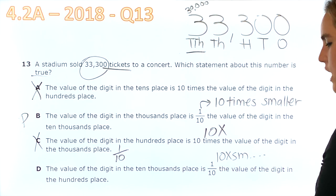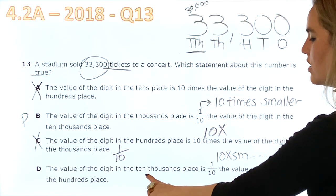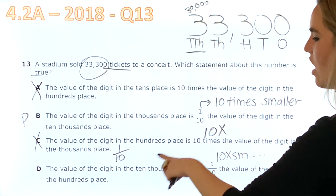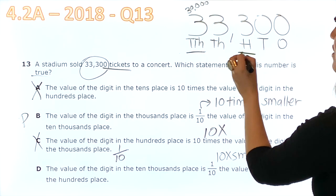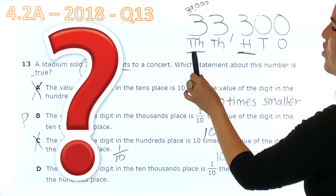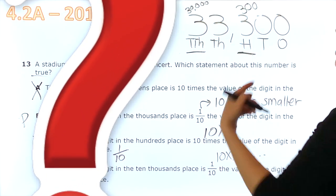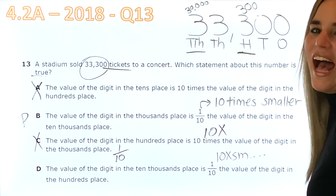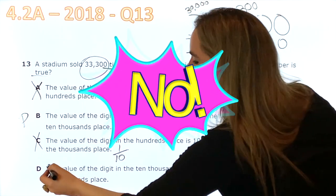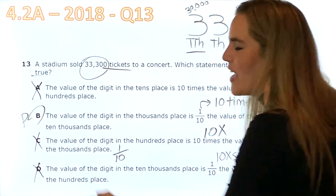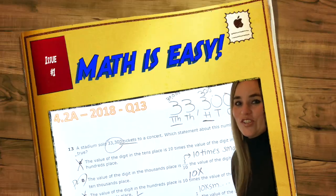But let's keep reading. The value of the digit in the ten-thousands place is one-tenth the value of the digit in the hundreds place. Boys and girls, do you think that 30,000 is one-tenth of 300? Absolutely not. So, now I know with all my heart that B is the correct answer.